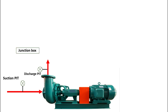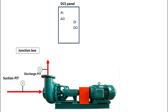Apart from that, we have a junction box — that's a field junction box available in the field. Then we have distributed control system panels where we have input/output modules like analog input card, analog output card, digital input card, digital output card, and other cards as well.